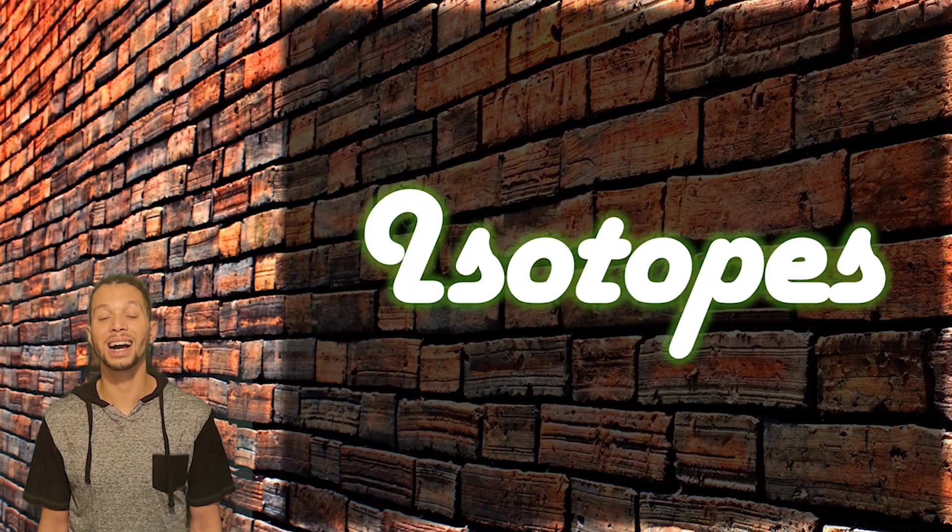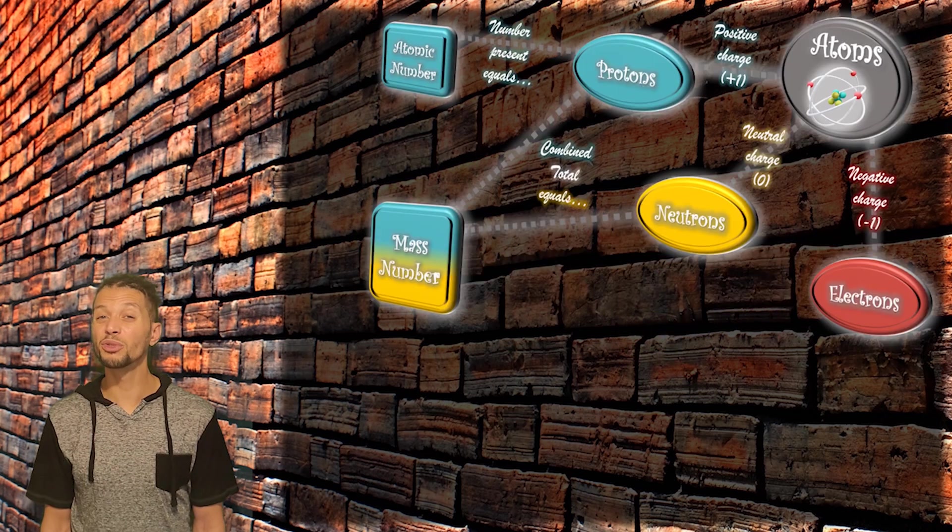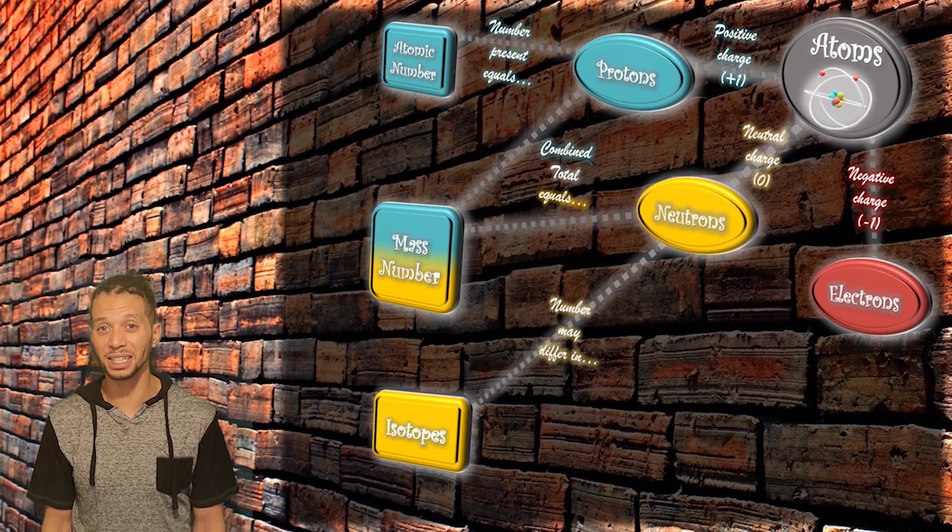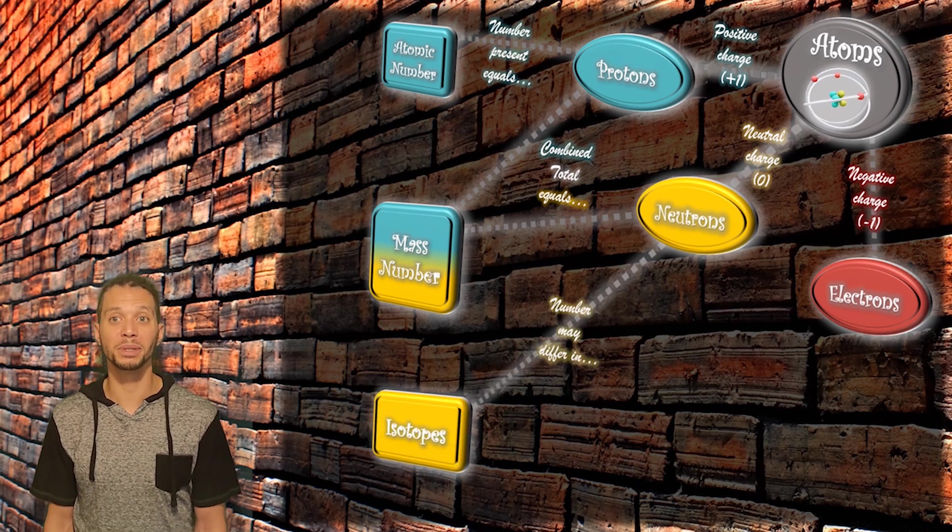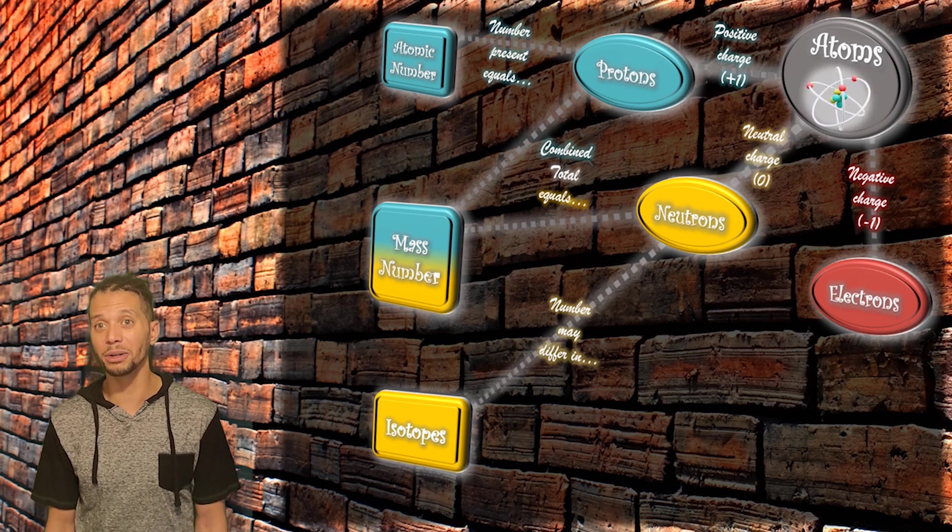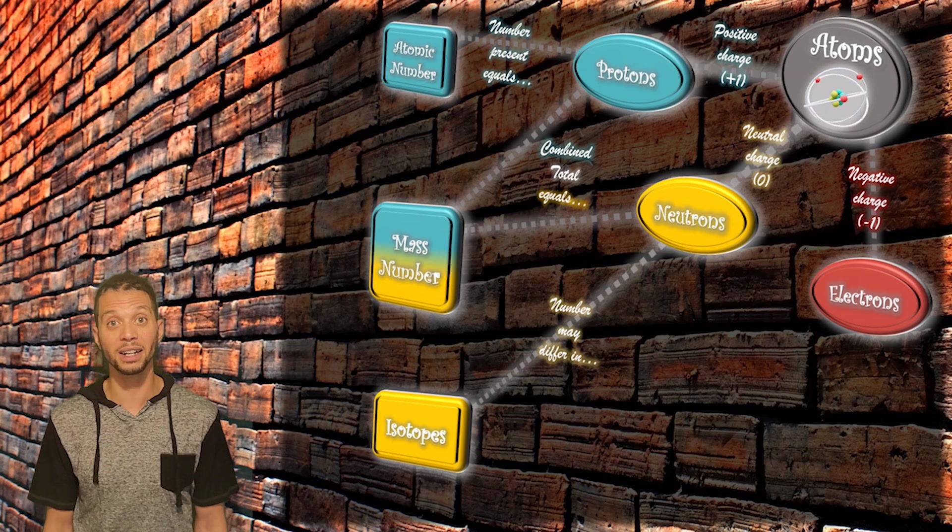These different versions of an element are known as isotopes, and they are different from each other because of their masses. And because we know that the protons give an element its identity, isotopes of an element are a copy of that element that is either heavier or lighter because it has either more or less neutrons inside of it.